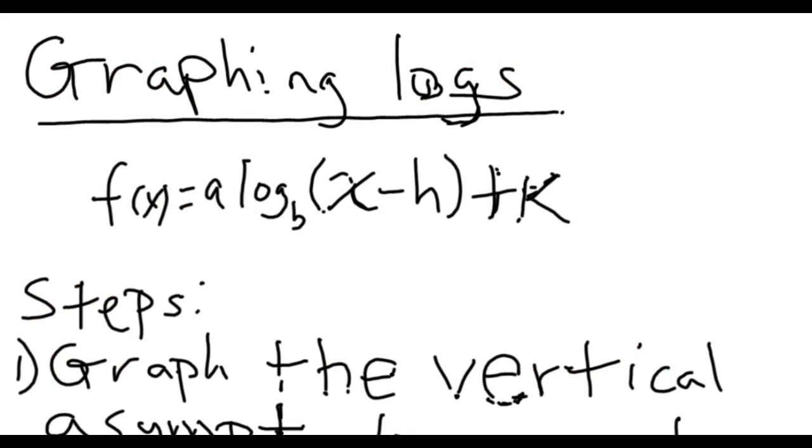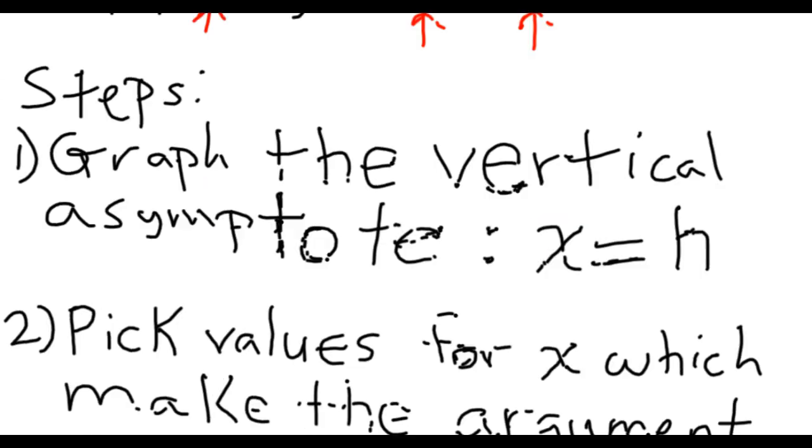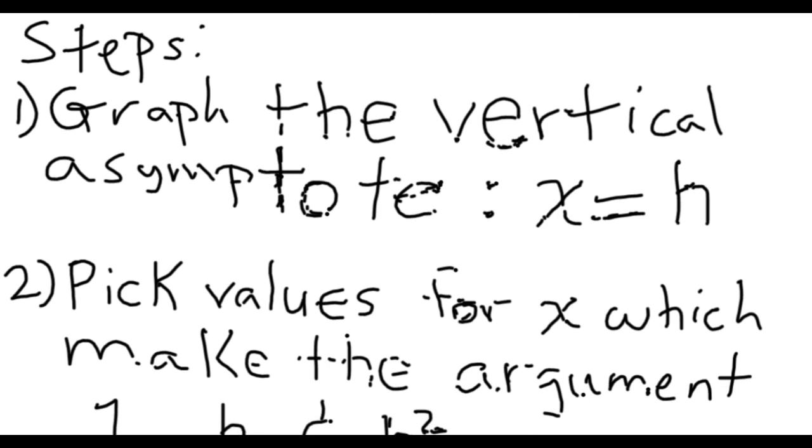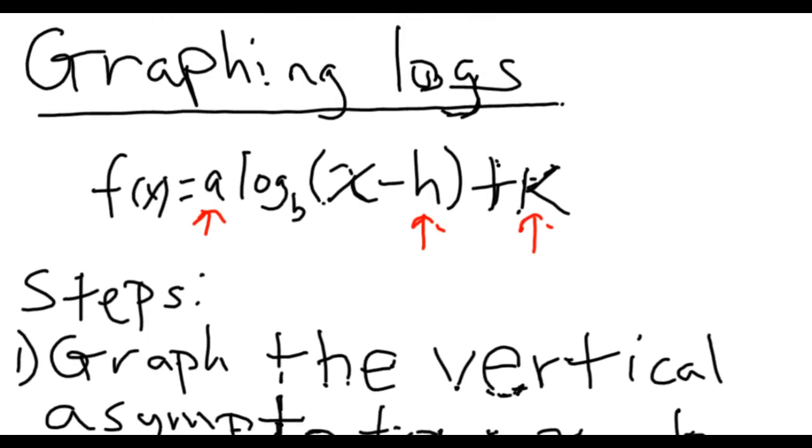If I have an equation F of X equals A log base B of X minus H plus K, these will be the transformations that we have on a regular log equation. These are the steps that we want to go through to graph any log equation. The first thing is we're going to have to graph the vertical asymptote X equals H.